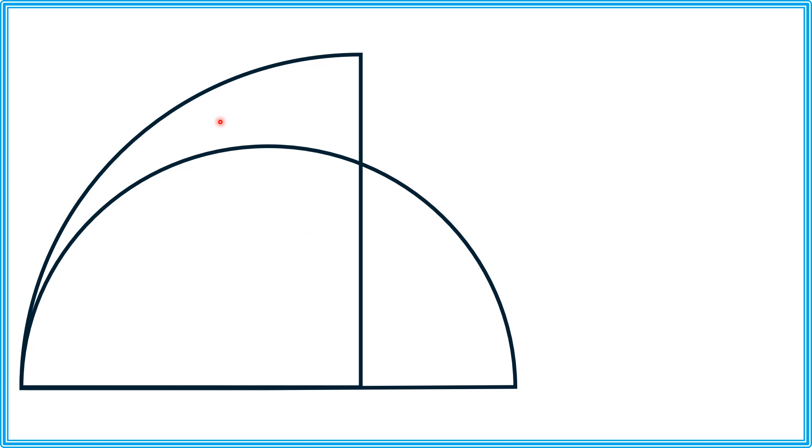These are in such a way that this portion and this portion, these two areas are equal. Let's say these two areas are A.